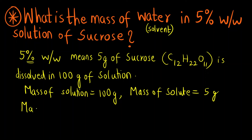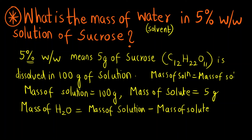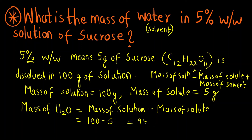So what will be the mass of water, i.e., mass of solvent? It will be mass of solution minus mass of solute. We know that mass of solution equals mass of solute plus mass of solvent, so rearranging: mass of solvent = mass of solution − mass of solute = 100 − 5 = 95 grams of water. So our answer is 95 grams.